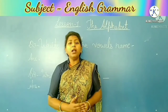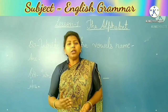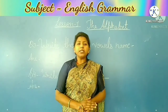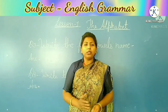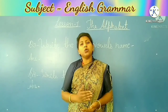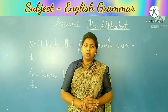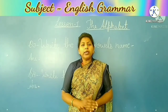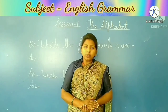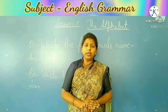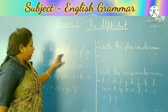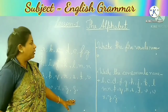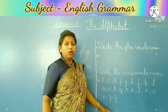And out of these letters, there are five vowels and twenty-one consonants. In mein se jo five letters hote hain woh vowel hote hain, aur twenty-one consonant hote hain. So vowels kya hote hain aur consonant kya hote hain — yeh mein aapko bataungi. Children, now look at the board.